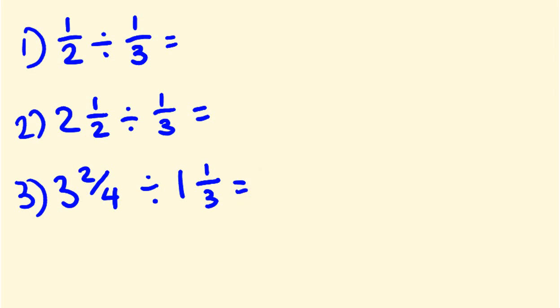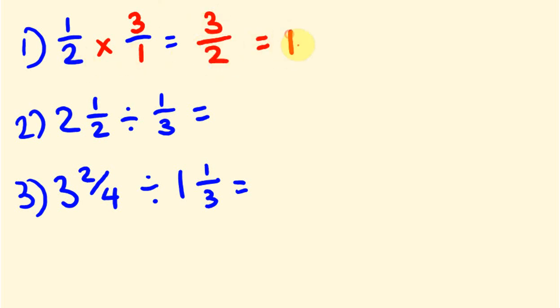Okay, I'll go through the answers. First: a half divided by a third. Change to times and flip the third — so this becomes 3 over 1. Then 1 times 3 is 3, over 2 times 1 which is 2. Three divided by 2 is 1 remainder 1, which we put over 2. So the answer is 1 and a half.